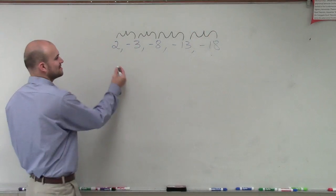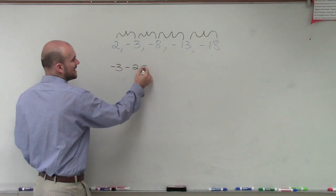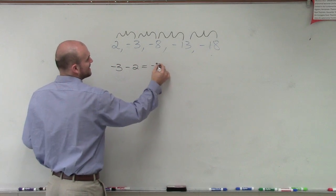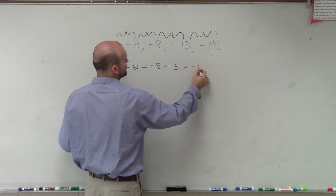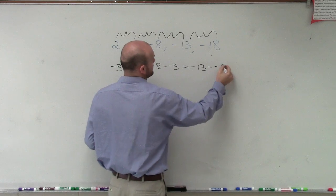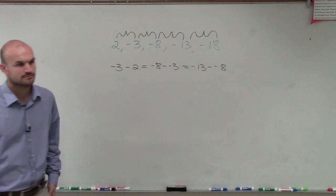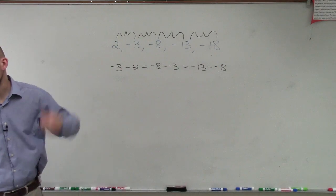So to do that, we simply just take a_3 minus a_2. That has to be equal to negative 8 minus negative 3, which has to be equal to negative 13 minus negative 8, right? And then you can keep on going and so on and so on.